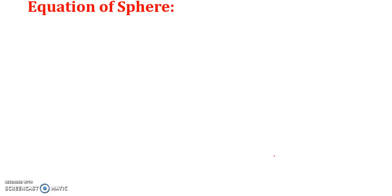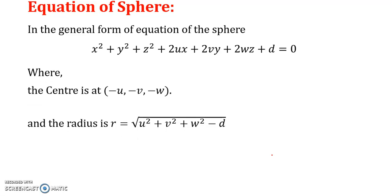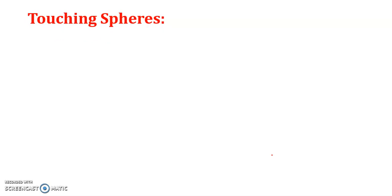Now, while calculating the equation of a sphere, in most cases we consider the general form: x² + y² + z² + 2ux + 2vy + 2wz + d = 0, where the center is (−u, −v, −w) and radius r = √(u² + v² + w² − d). Remember this formula as we will use it in many cases. Now we consider different types of examples on spheres.